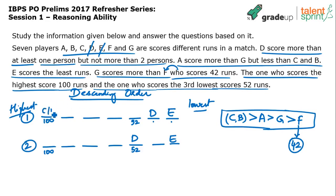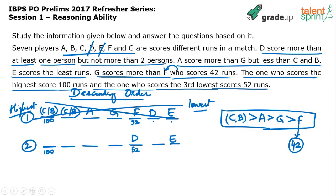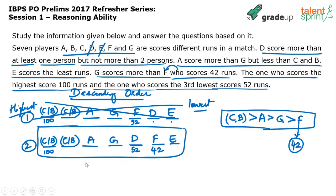In Case 1, the third lowest position would be occupied by F. But F scored 42, not 52 — this violates the condition, so Case 1 is wrong. In Case 2, with D in third position from lowest, the five remaining positions follow the order C or B first, then the other, then A, G, D, F, E. F scored 42 which is less than 52 — this is satisfied. So the final arrangement is: C/B, B/C, A, G, D (scored 52), F (scored 42), E.